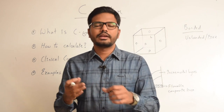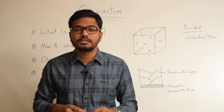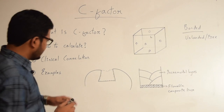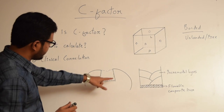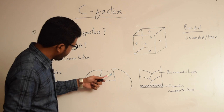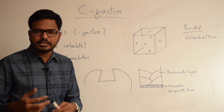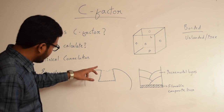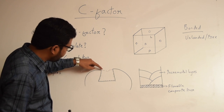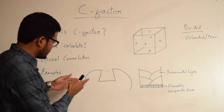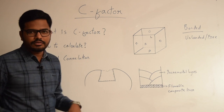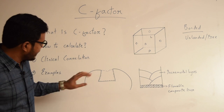So how is it clinically relevant and why do we need to understand the importance of C-factor? For example, in this case, we have a cavity. And when we are planning to restore this cavity with a composite material or any resin-based material, we have bonded surfaces as well as unbonded or free surfaces. In this two-dimensional diagram, we have three bonded surfaces and one unbonded surface.